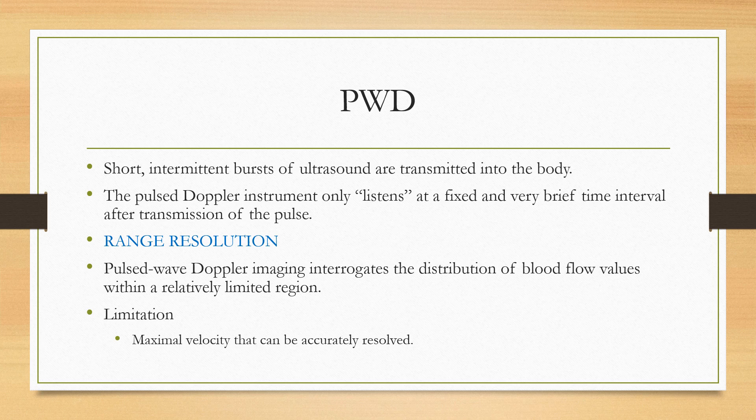Pulse Wave Doppler interrogates the distribution of blood flow values within a relatively limited region. In contrast, Continuous Wave Doppler uses two transducers — one continuously emitting sound waves and the other continuously receiving reflected sound waves from RBCs along the entire straight line through which the ultrasound travels, from the transducer to the far end of the heart. All reflected sounds along that whole line are received by the receiving transducer, while Pulse Wave Doppler listens only to that particular sample volume.